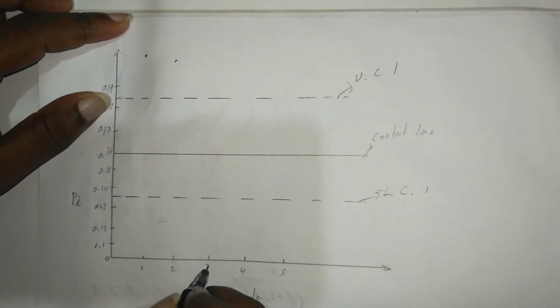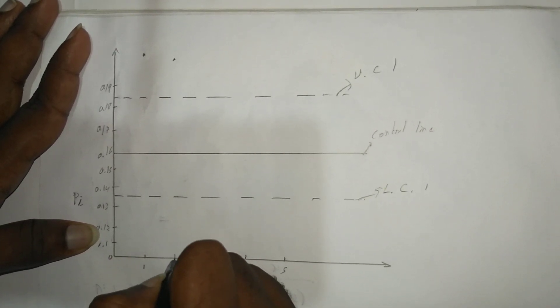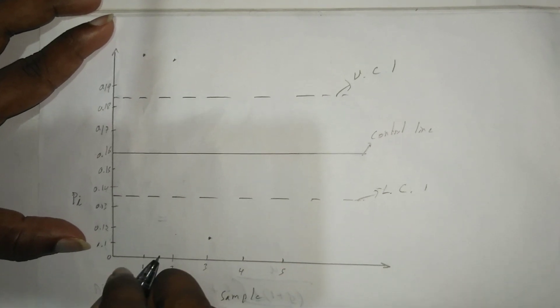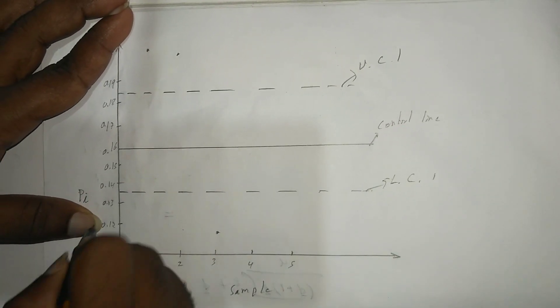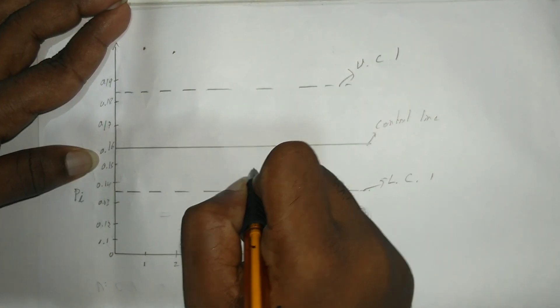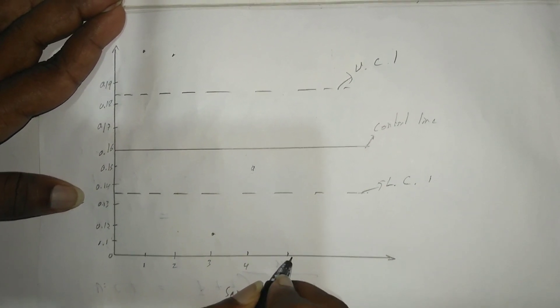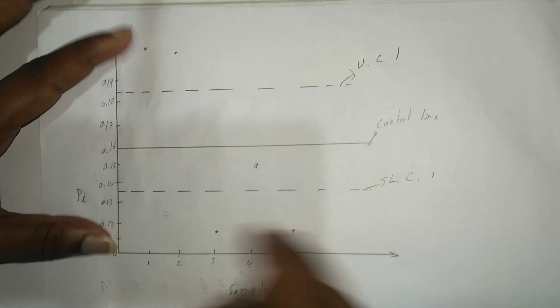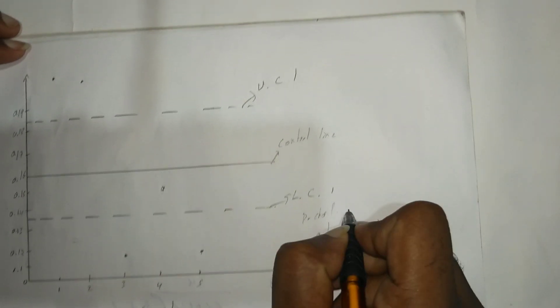The fourth value for sample 4 is 0.157, which is in control. For the fifth sample, the pi value is 0.1125. Therefore, our p-chart shows the process is out of control.